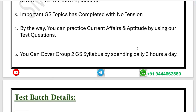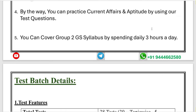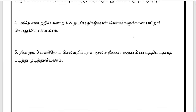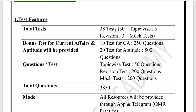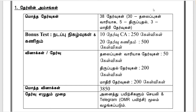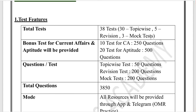During extra time, you will be learning current affairs and aptitude — that is 2 hours for language. We will do this for 4 months, covering 6 hours daily for Group 2. In total, there are 38 tests: 30 topic-wise tests, 5 revision tests, and 3 mock tests.